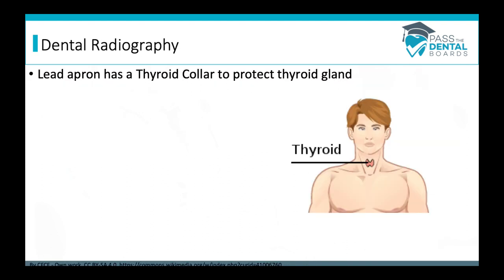The thyroid is important to dental radiography because it can receive unnecessary radiation exposure during a panoramic x-ray. That's why we don't just need a lead apron — the lead apron often includes a thyroid collar that goes around the neck to protect the thyroid gland.